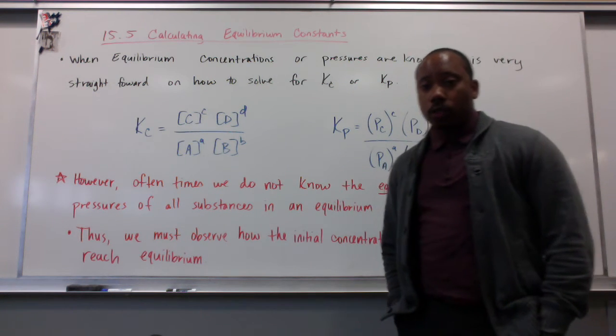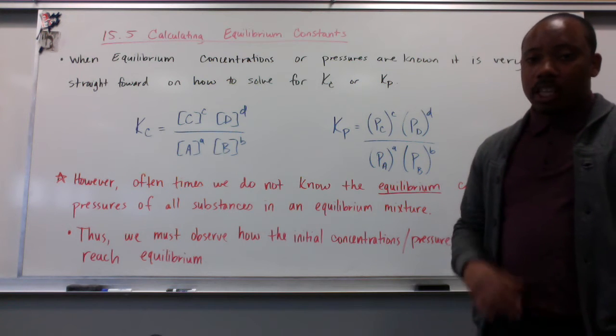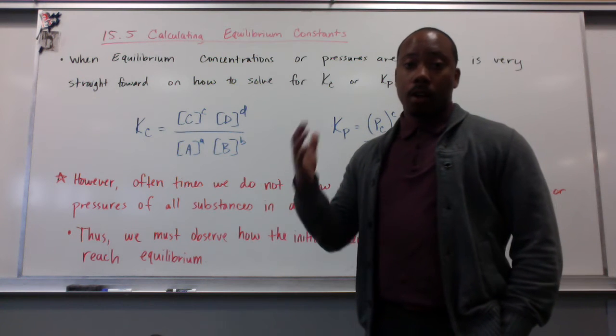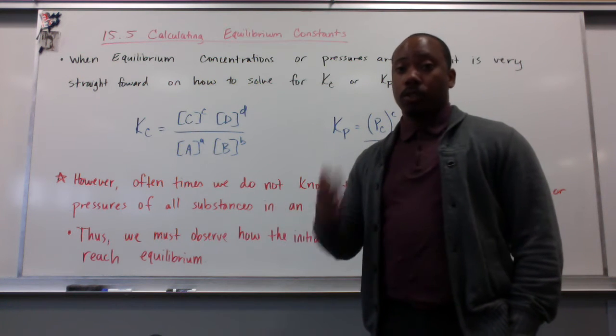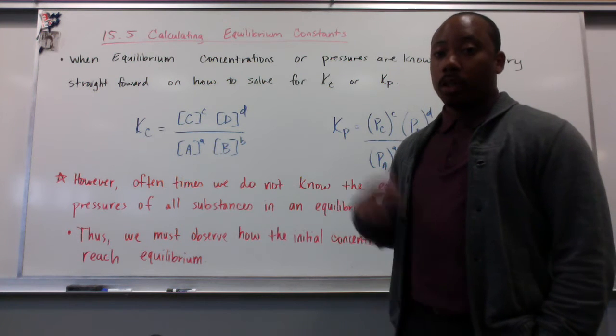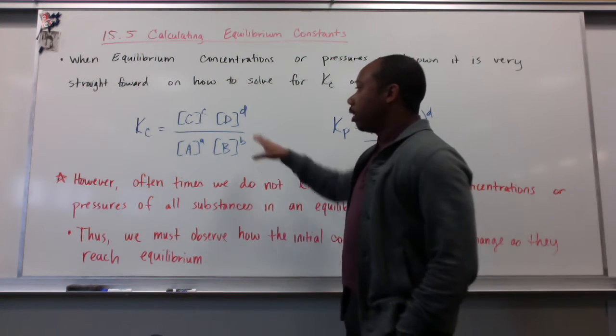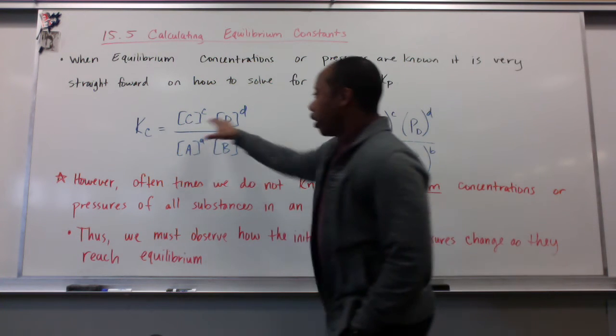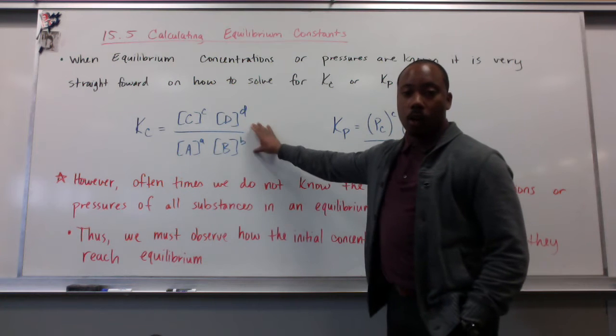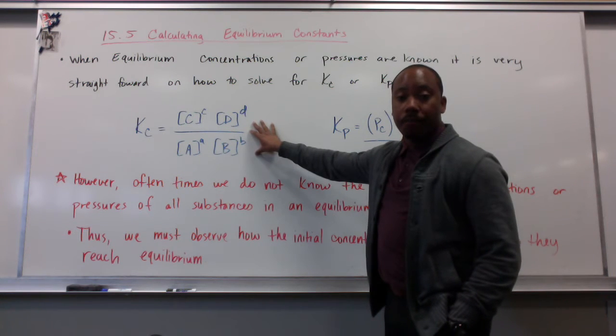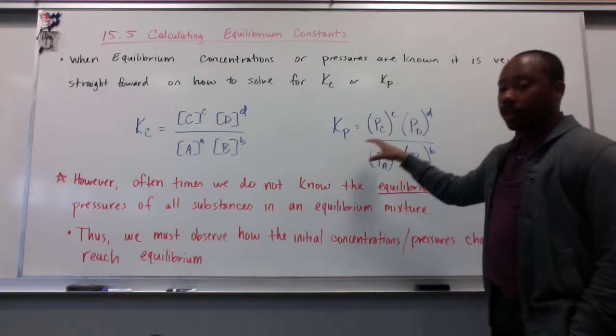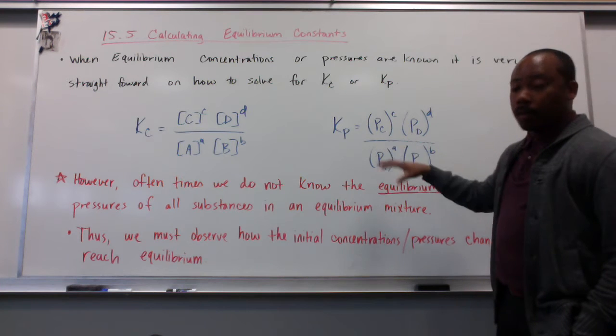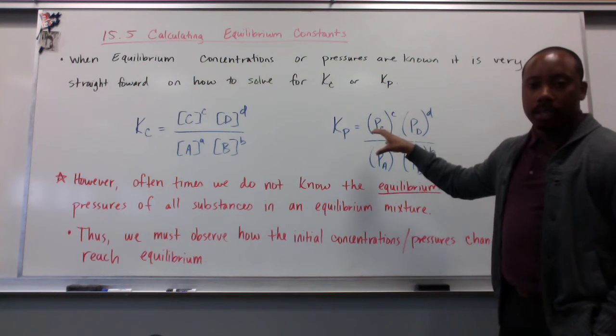When equilibrium concentrations or pressures are known, it's pretty straightforward and actually pretty easy to calculate your equilibrium constants for concentration or pressure, Kc or Kp. We learned last class how to do that using these different equations. If we know the concentrations, we can plug them in with their correlating coefficients and figure out the Kc value. The same with partial pressures - if we know the partial pressures of our gases in equilibrium, we can calculate Kp.